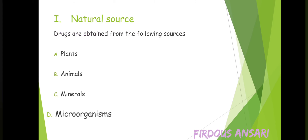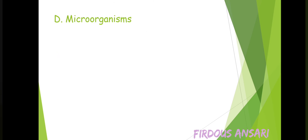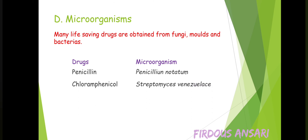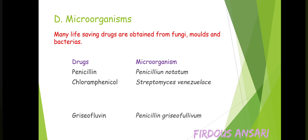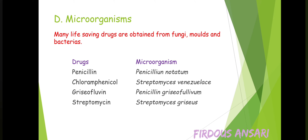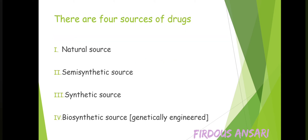Many life-saving drugs are obtained from fungi, molds, and bacteria. These drugs are synthesized from microorganisms and are used for killing other microorganisms. Examples: penicillin from Penicillium notatum; chloramphenicol from Streptomyces venezuelae; griseofulvin from Penicillium griseofulvum; streptomycin from Streptomyces griseus; neomycin from Streptomyces fradiae.